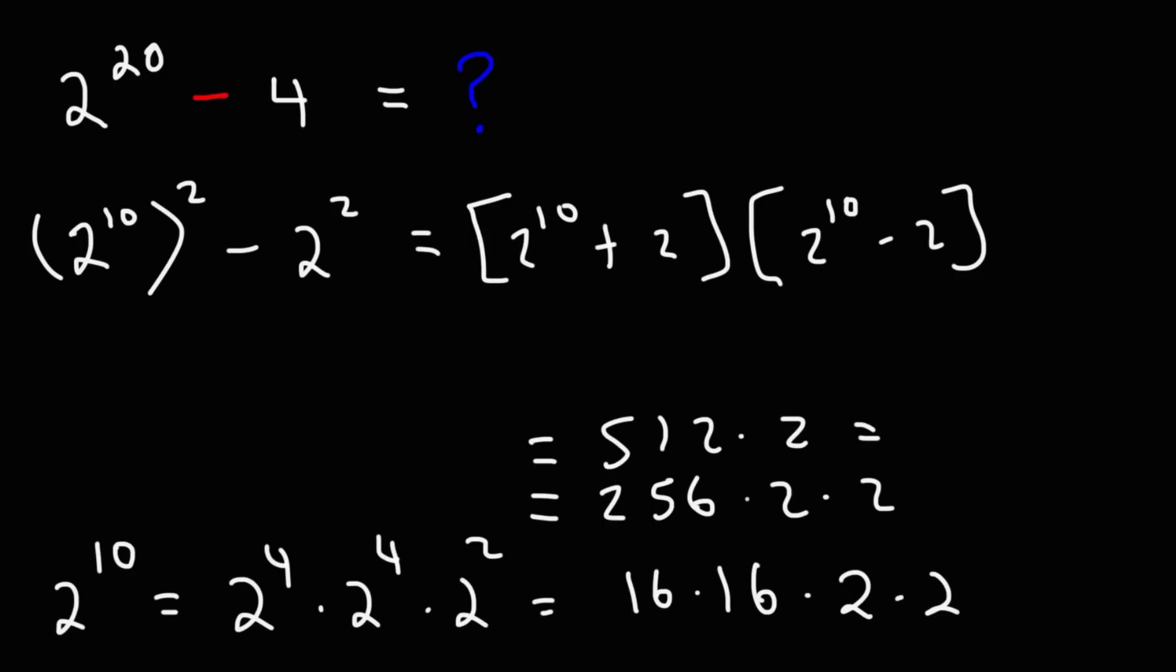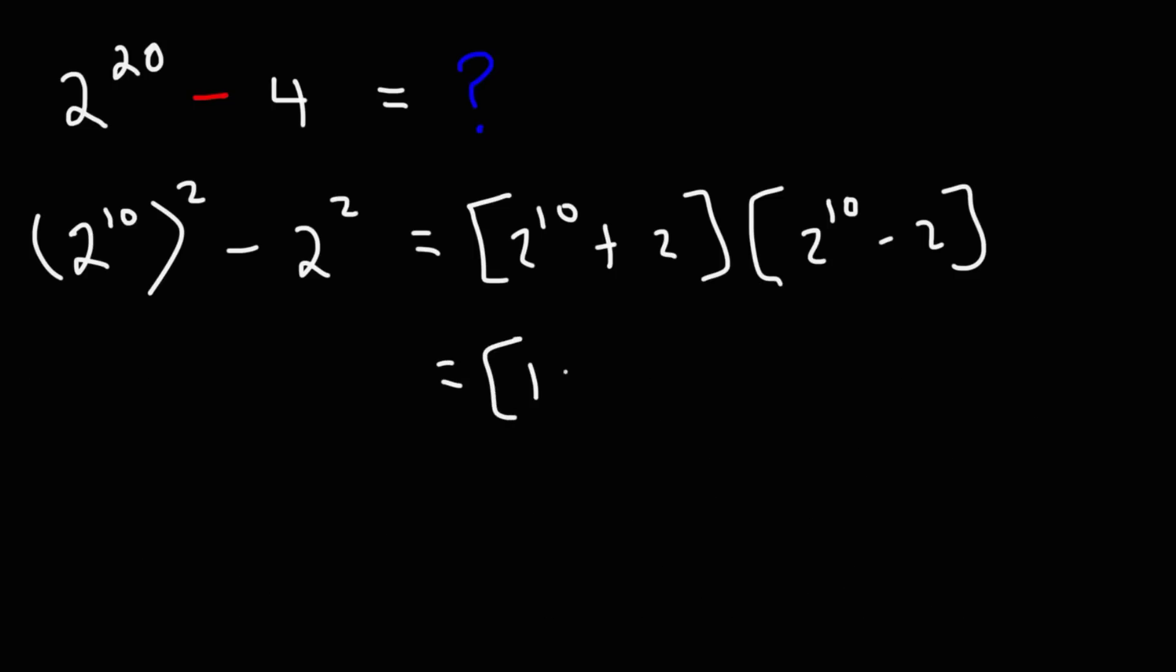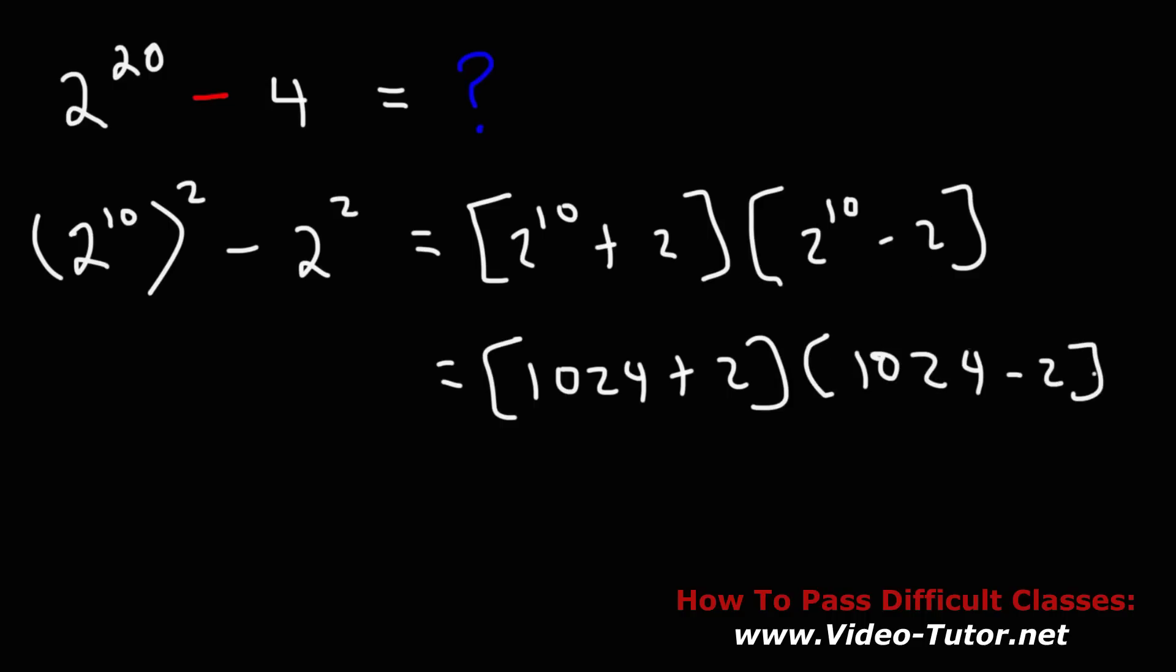Now if you double 512, 500 plus 500 is 1000, 12 plus 12 is 24, so you get 1024. So that's the value of 2 to the 10th power: it's 1024. So we have 1024 plus 2 and 1024 minus 2.